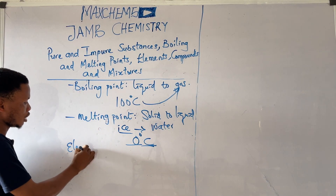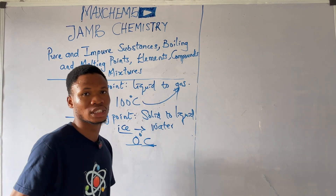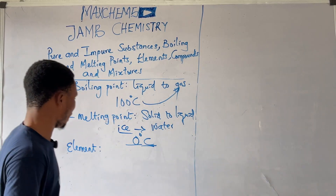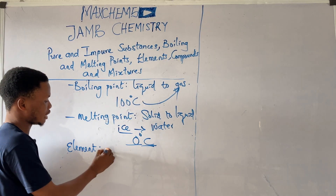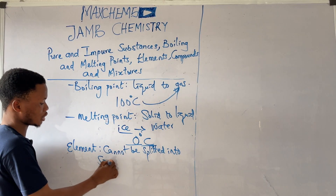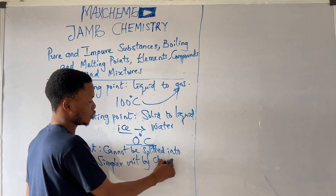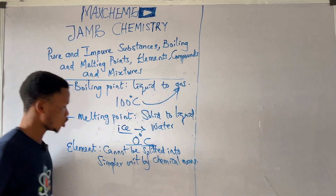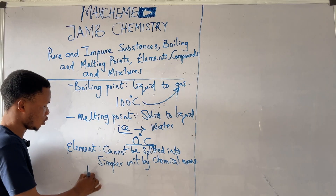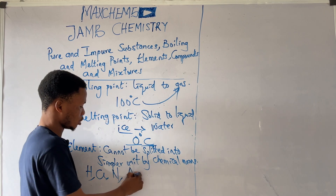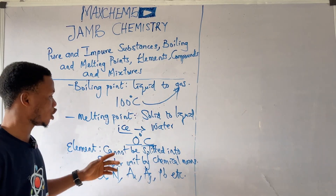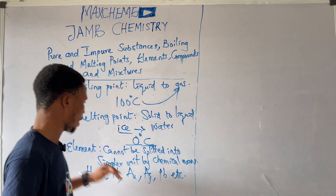So what are elements? An element is a substance that cannot be split into simpler form using ordinary chemical process. By chemical method, we cannot separate elements. Examples of elements include hydrogen, chlorine, nitrogen, gold, silver, lead, etc. Any substance that cannot be split into simpler units by ordinary chemical means is known as an element.